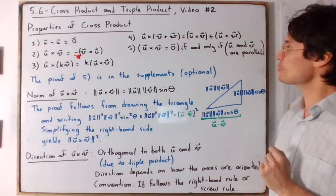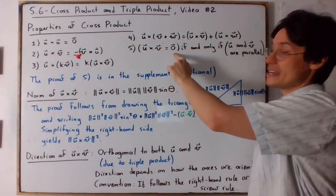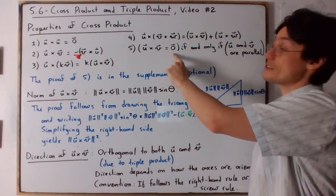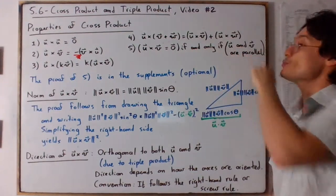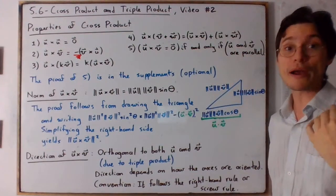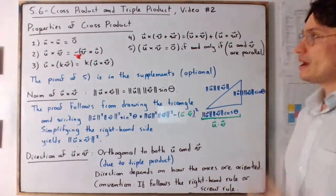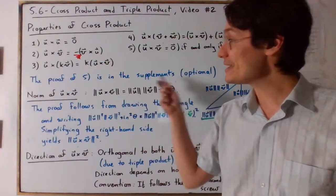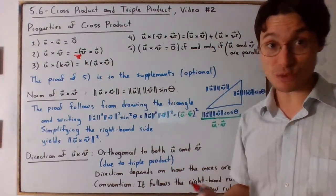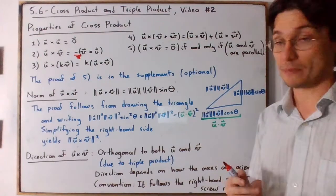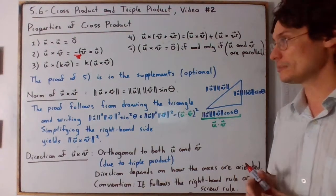The fifth property: u cross v equals the zero vector if and only if u and v are parallel. The proof of this fifth property is in the YouTube supplements — watching it is optional but recommended.